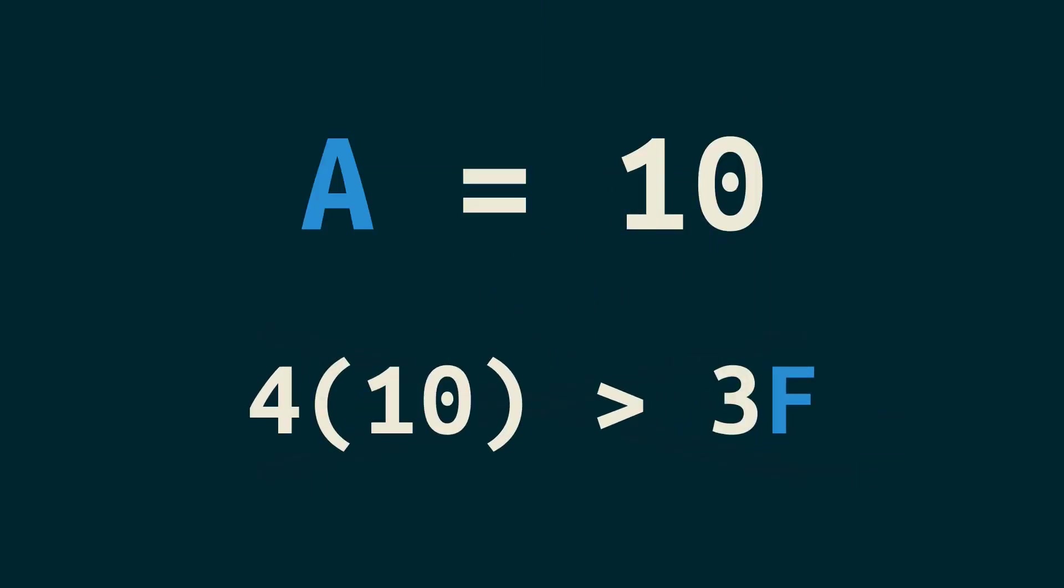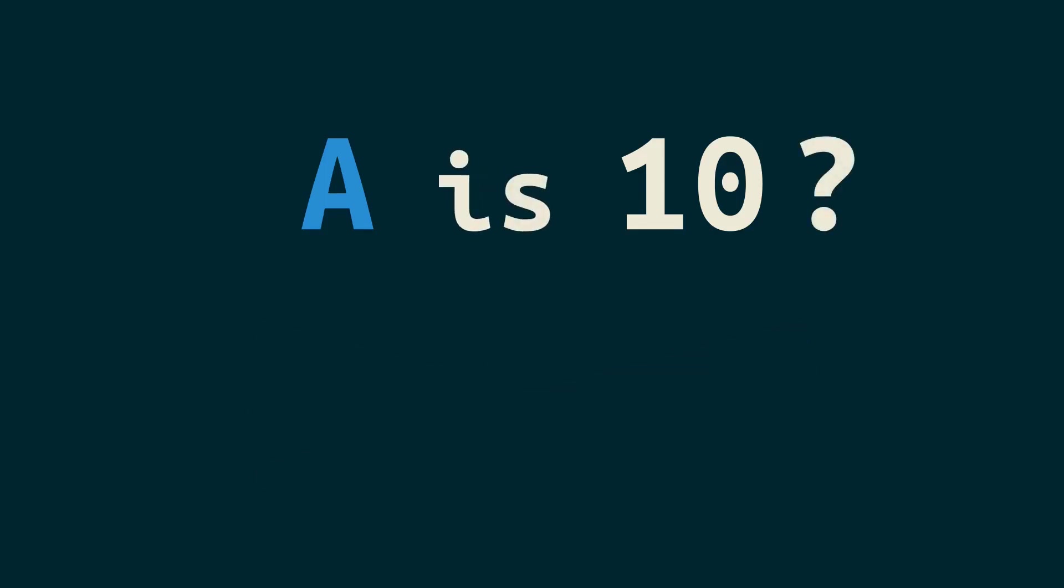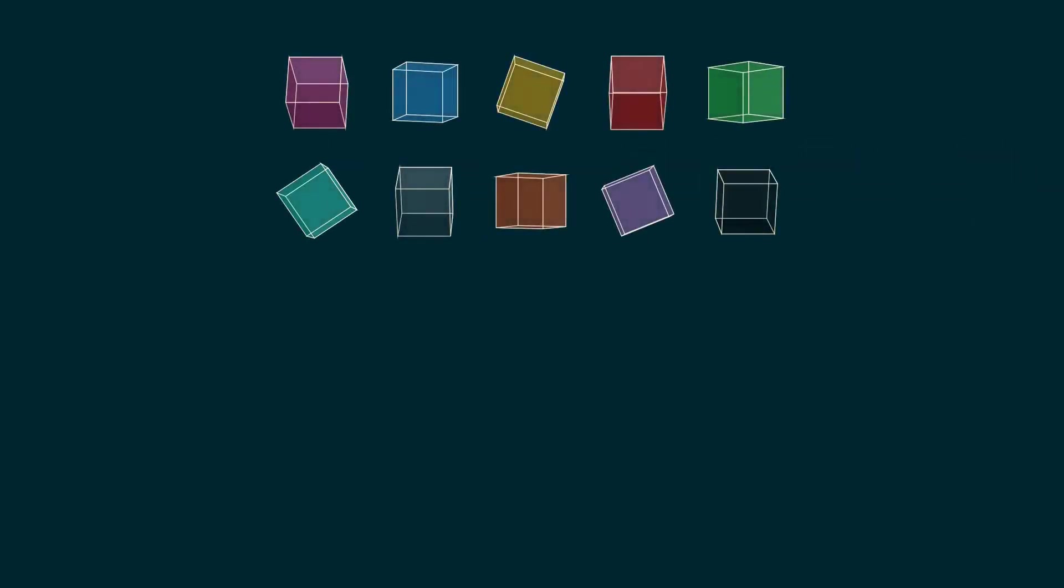So I just said A is not a variable subbed in. What is it, then? It's actually just a different way to write 10. What do I mean by that? Well, what is 10 really?